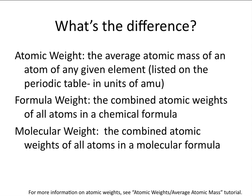For more information on atomic weights, see the tutorial on atomic weights and average atomic mass. The formula weight is the combined atomic weights of all atoms in a chemical formula, while the molecular weight is the combined atomic weights of all atoms in a molecular formula. There's really not too much of a difference — for all purposes they're basically the same thing. However, the molecular weight refers only to molecules, so not ionic compounds, where the formula weight can also refer to the empirical formula for an ionic compound.